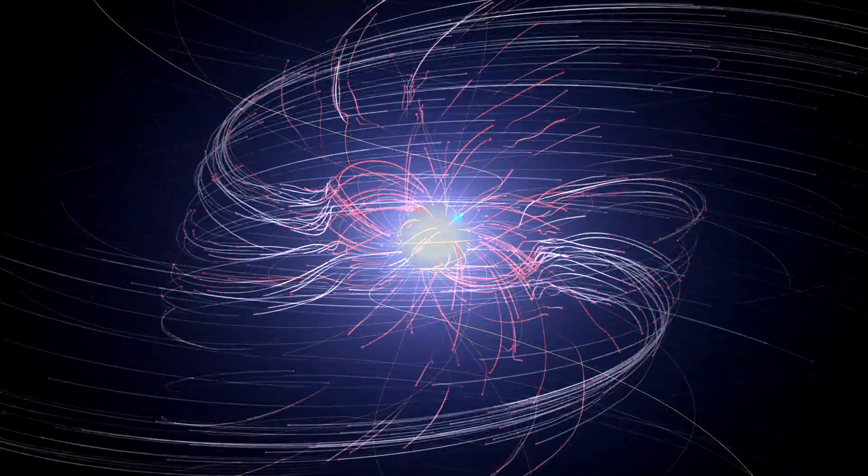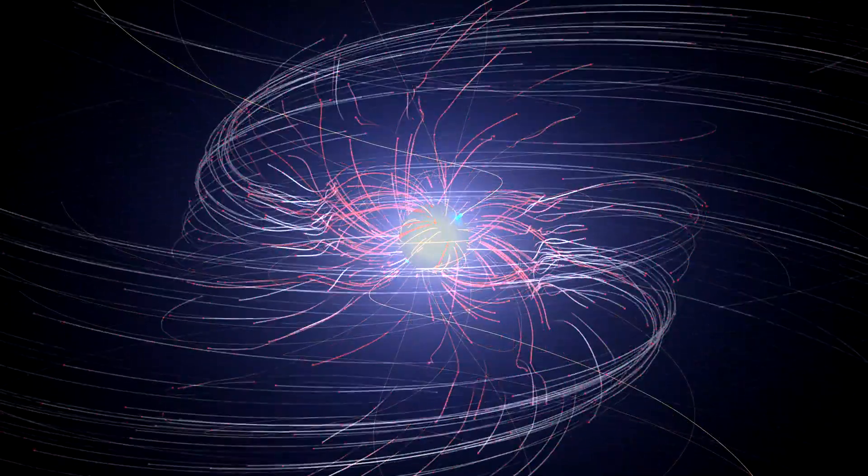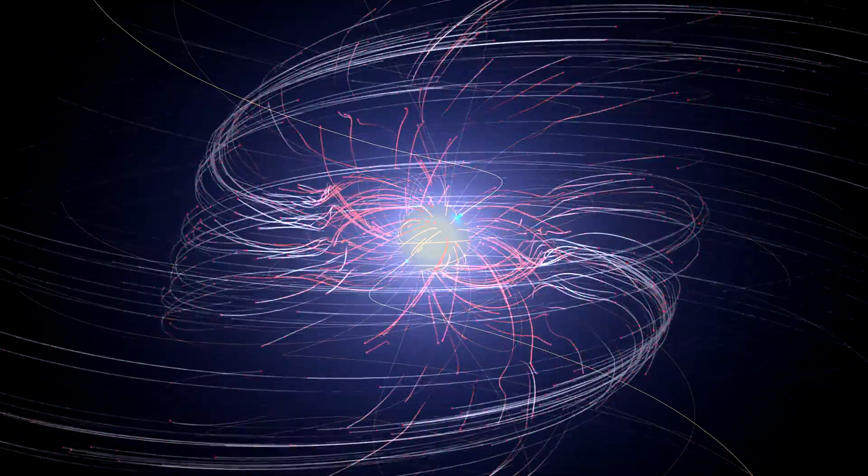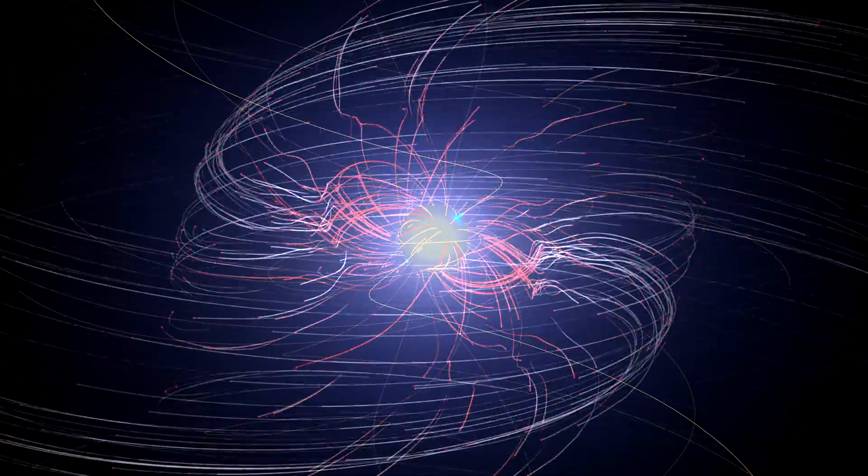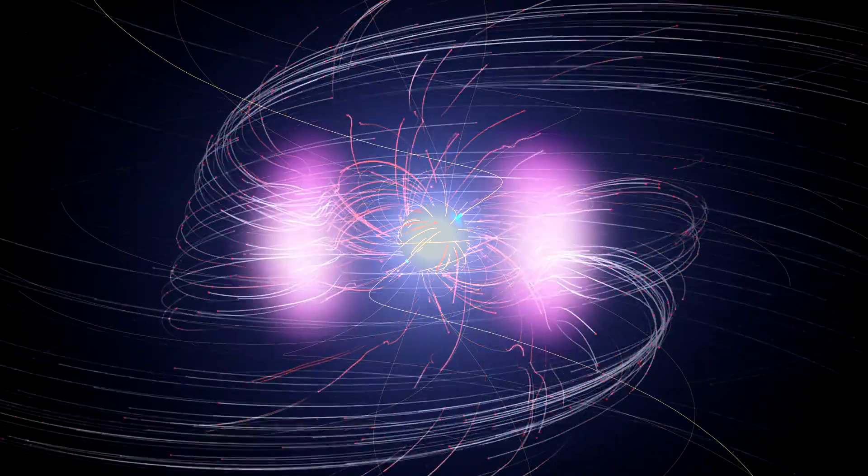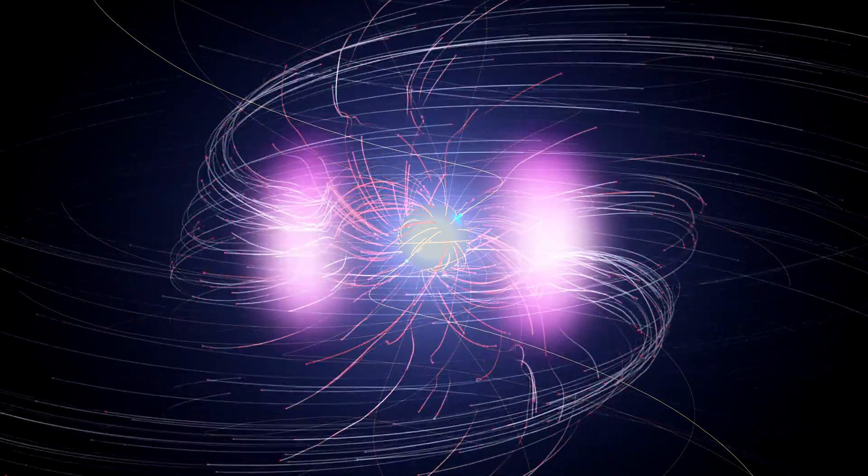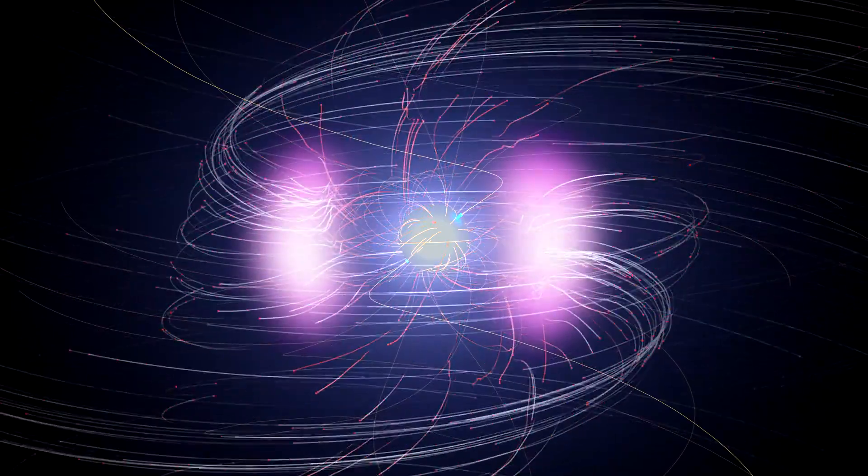The simulations also show that a small percentage of positrons likely hold the secret to a pulsar's gamma ray emission. Some of these particles become boosted to tremendous energies at points within the current sheet where magnetic field lines meet.